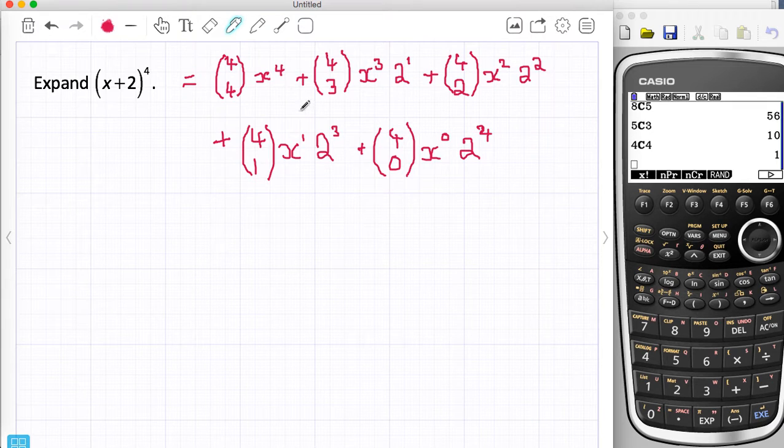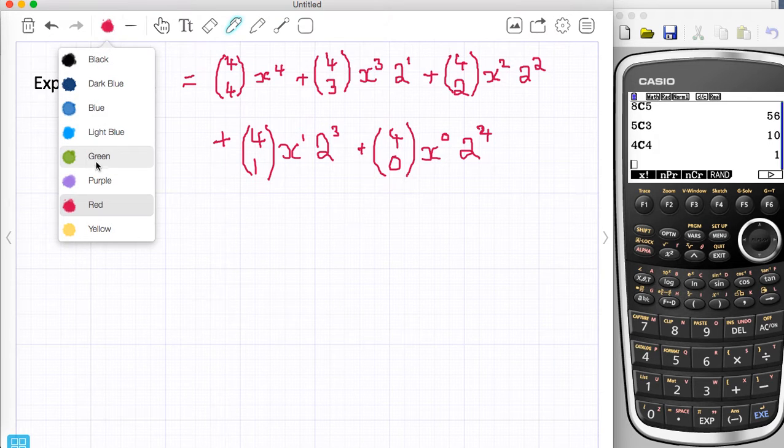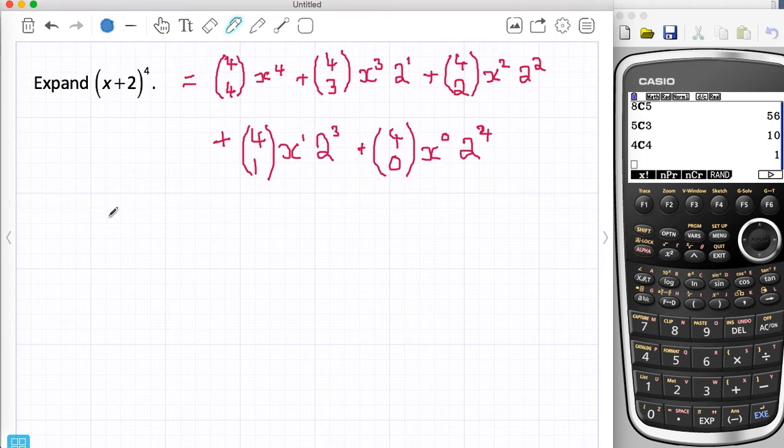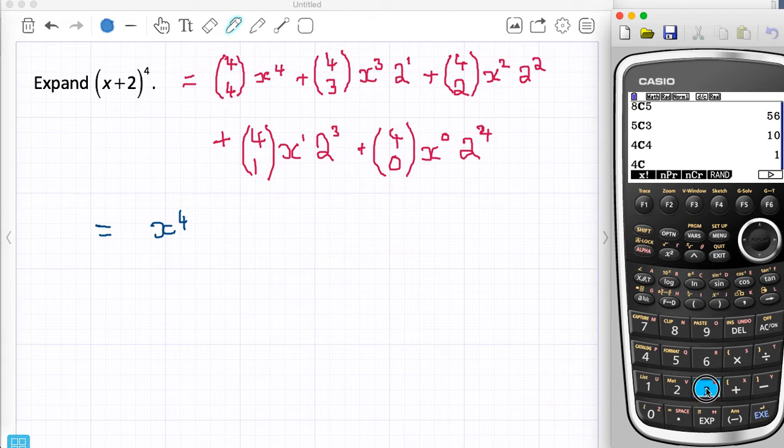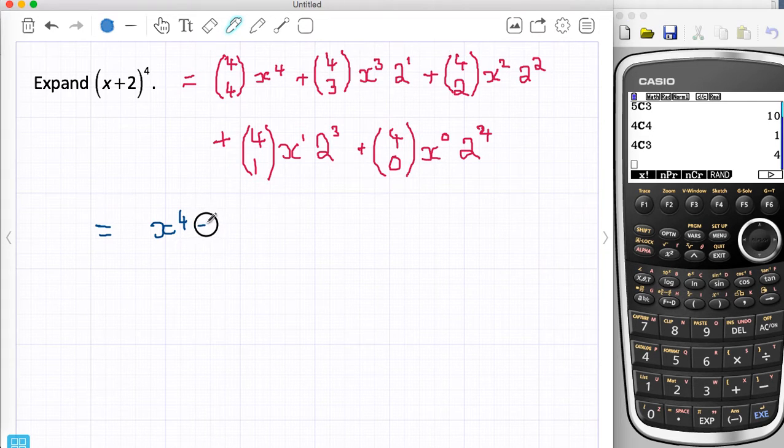So now I can go through and work it out. 4c4 we've already worked out so that's 1, so this is x to the power of 4. So that one's going to give me 4. 4c3 is 4, but I can just do that on the calculator to show you that it's exactly 4. So that's 4 times 2 gives me 8. So this next one is going to give me 8x to the x3.